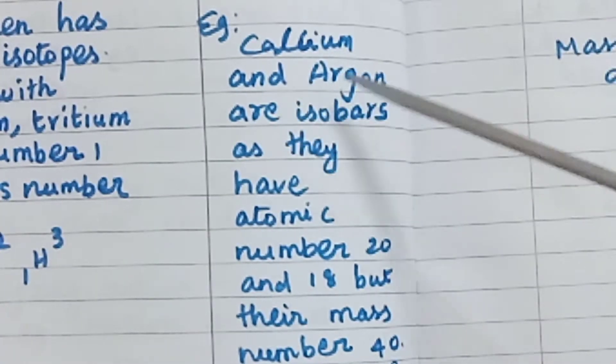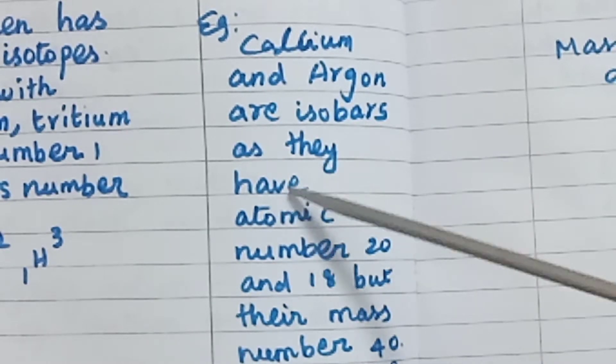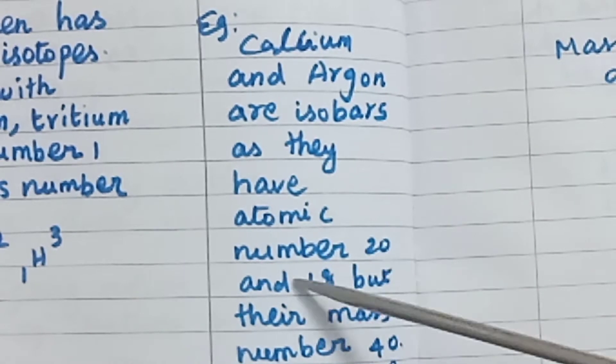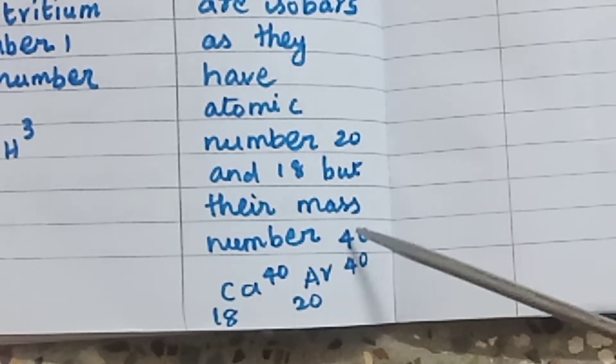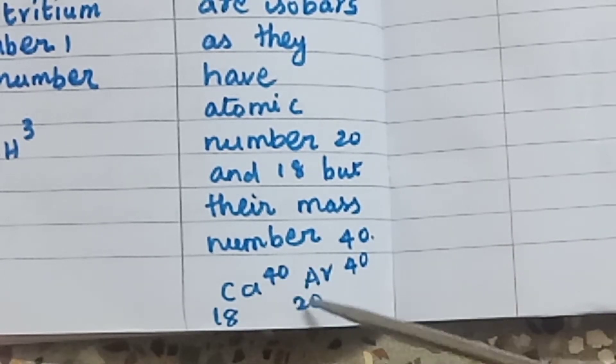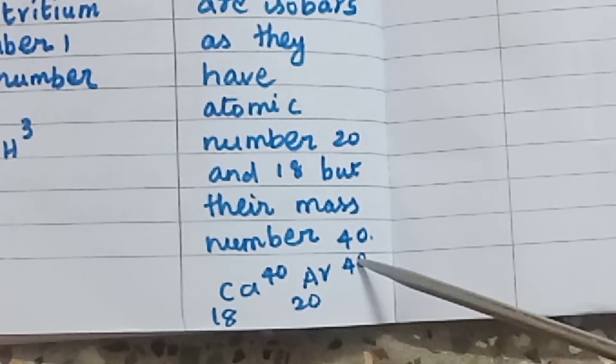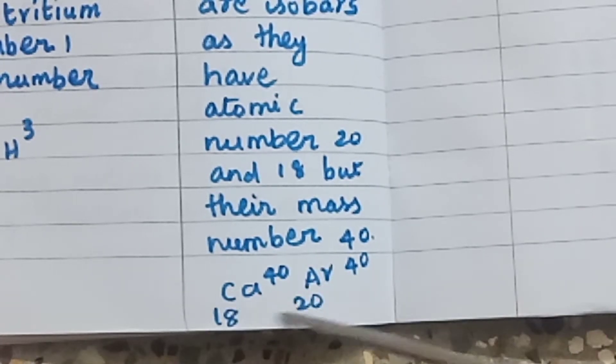Example: Calcium and argon are isobars as they have atomic numbers 20 and 18 but their mass number is 40. Calcium 20, 40 and argon 18, 40. Mass number 40, atomic numbers 18 and 20.